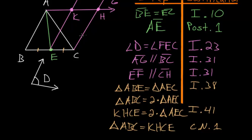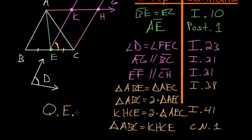We've constructed a parallelogram equal in area to the original given triangle, and it contains an angle equal to the given angle D. This is exactly what we set out to construct, so we conclude with QED.